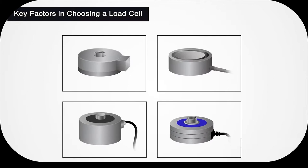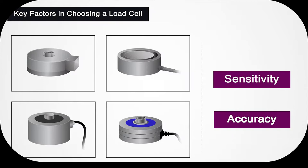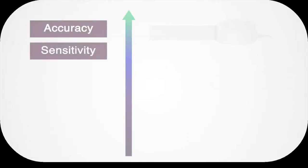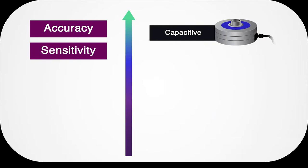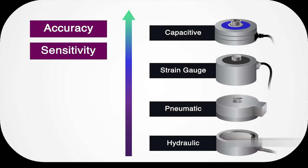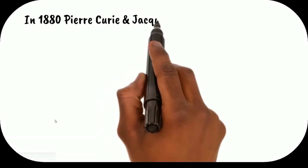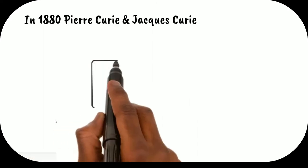Determining which load cell your application requires depends on how sensitive and accurate it needs to be. Capacitive load cells have the highest accuracy and sensitivity. A strain gauge load cell is next in line. Pneumatic and hydraulic load cells are the least sensitive and accurate types, though still useful in certain applications.